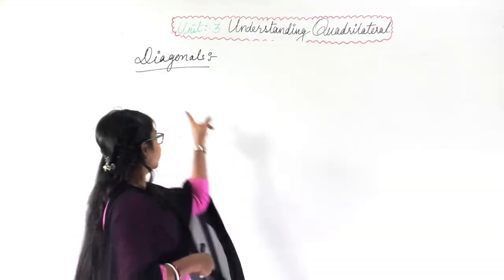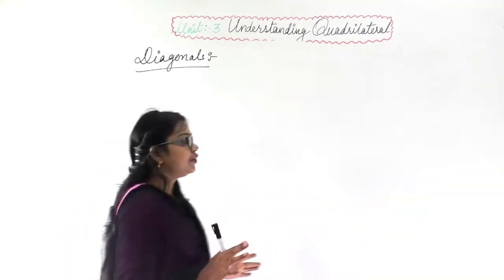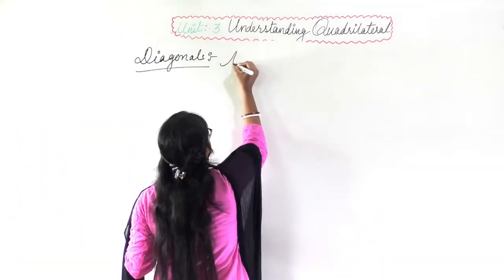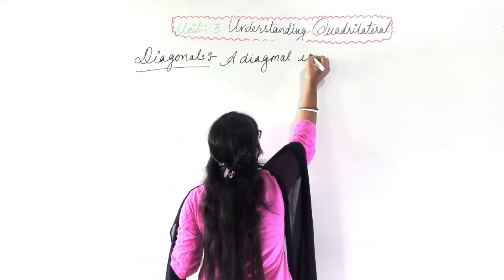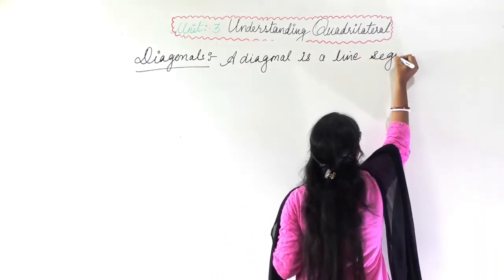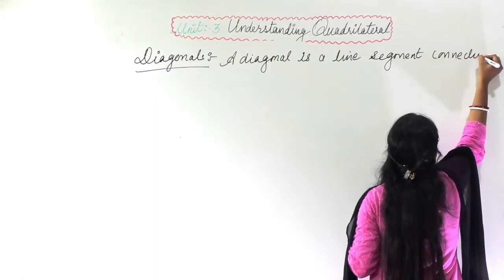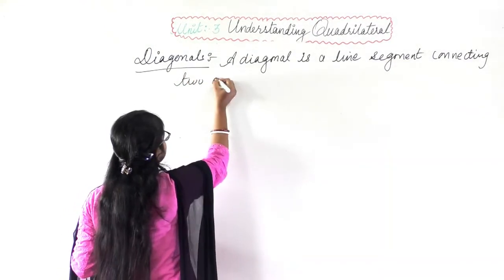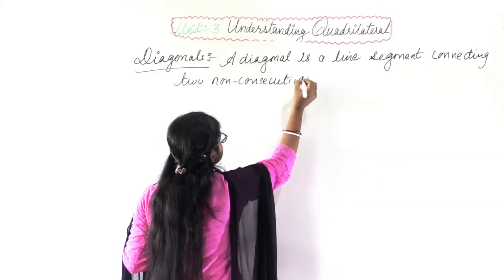What do you mean by diagonal? A diagonal is a line segment connecting two non-consecutive vertices.